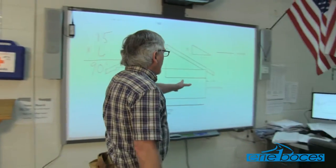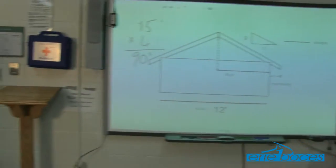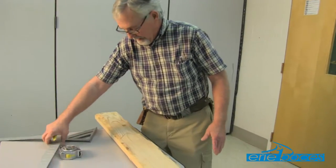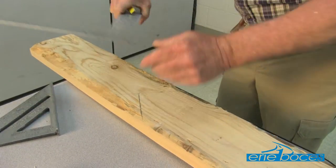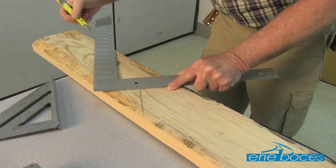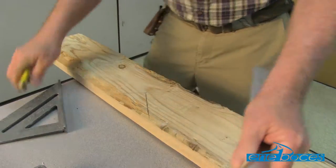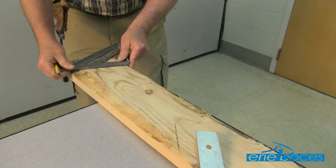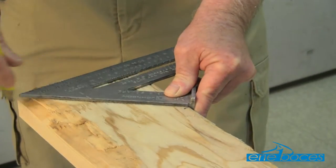The next step is to mark the overhang. Our diagram calls for a 1-foot overhang including the fascia, and we're using a 2x6 sub-fascia. So we subtract 1½ inches from 12 inches, giving us 10½ inches. We come perpendicular to the plumb cut at the bird's mouth and mark 10½ inches, then draw our plumb cut for the overhang by rotating the speed square until we read 9 on the common cut and drawing that plumb cut line.